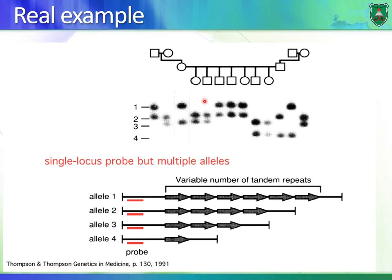Here is an example of a pedigree. A square represents a male and a circle represents a female. You have a male and female who are married and have a daughter. Another family has a female and male who get married, have a boy, and that boy gets married to a girl. They have several children: female, male, male, male, female, male, and female.